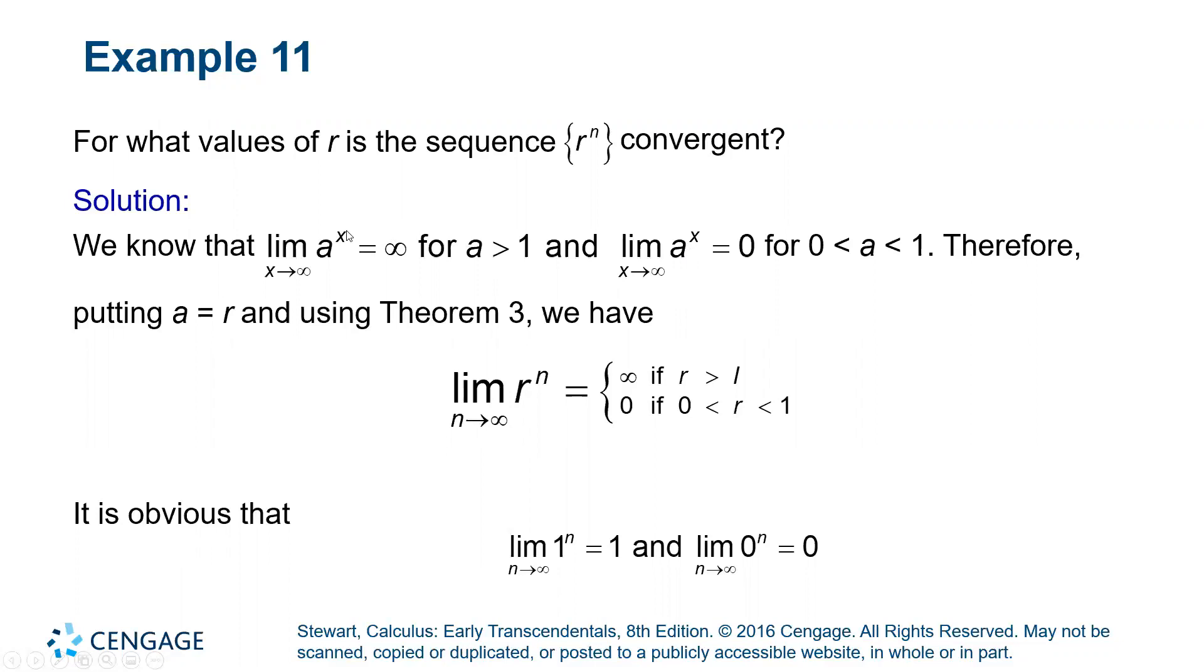So if we replace A in both of those limits with R, then we would have R to the N like we want up top. So we would know that the limit of R to the N is infinity if R is greater than one and zero if R is between zero and one using the same exact information from above.